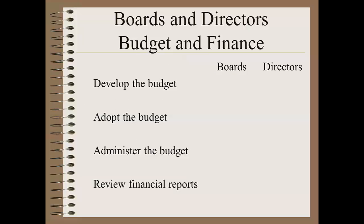Now let's start taking a look at the roles of library boards and library directors, first in the area of budget and finance. Boards and library directors work together to develop the budget, but boards have the responsibility of adopting a budget. Then, administering the budget falls to the director — within the constraints of the budget, the director is given authority to make expenditures without additional board authorization, except perhaps for a policy that orders for a single item exceeding a certain dollar amount should be brought to the board. Two thousand dollars might be a good breaking point for this. The board and director should also review regular financial reports to see how the library is doing compared to what was budgeted for both revenues and expenditures.